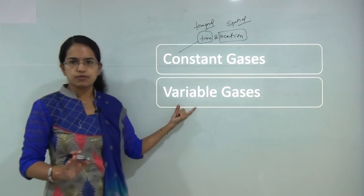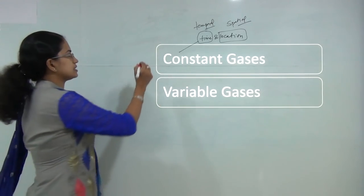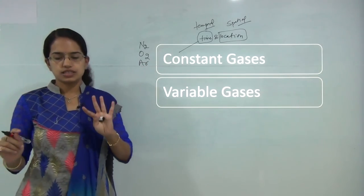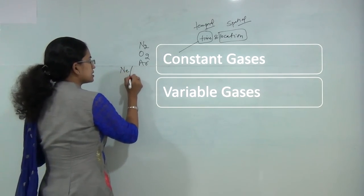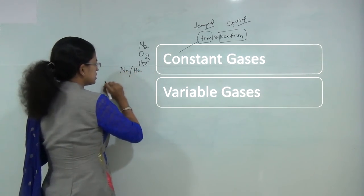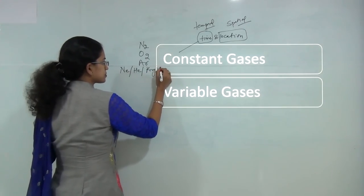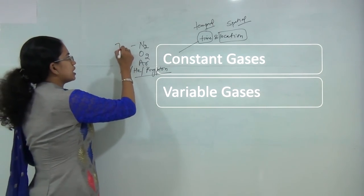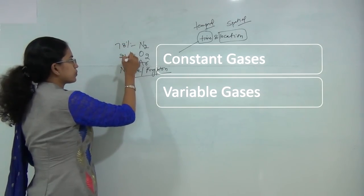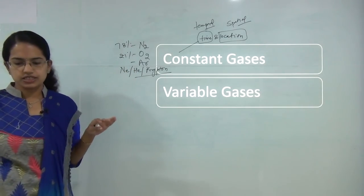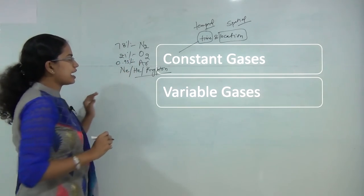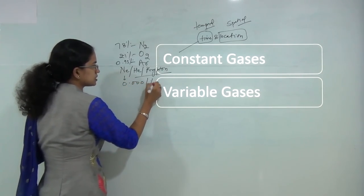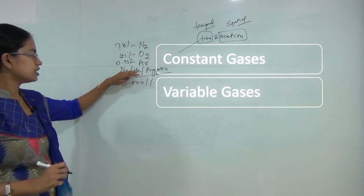The major constant gases are nitrogen, oxygen, and argon. Besides these, in trace elements you have neon, helium, and krypton. The percentage of these gases in the atmosphere remains constant: nitrogen around 78%, oxygen around 21%, argon around 0.93%, and neon, helium, and krypton with a proportion of 0.0001%.